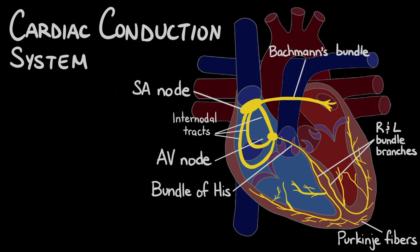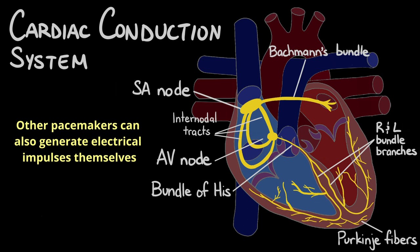If the SA node fails to function properly, other pacemaker cells, such as those in the AV node or the Purkinje fibers, can also generate electrical impulses themselves to take over the role of the primary pacemaker.